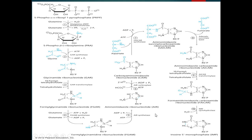After AIR or aminoimidazole ribonucleotide is formed, it is converted into CAIR or carboxyaminoimidazole ribonucleotide, with the use of AIR carboxylase enzyme, with the input of energy in the form of ATP. HCO3⁻ is converted into a proton, and two proton molecules are generated.